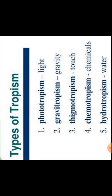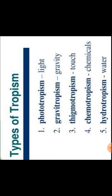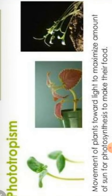The names given to these trophic movements are connected to their stimulus, so it will be easy to memorize. Photo means light, so phototropism is movement in response to light. Geo/gravitropism is towards gravity. Thigmo means touch, so thigmotropism is movement towards touch. Chemo comes from chemical. Hydro means water. And thermo means heat, so thermotropism is response in the direction of heat.